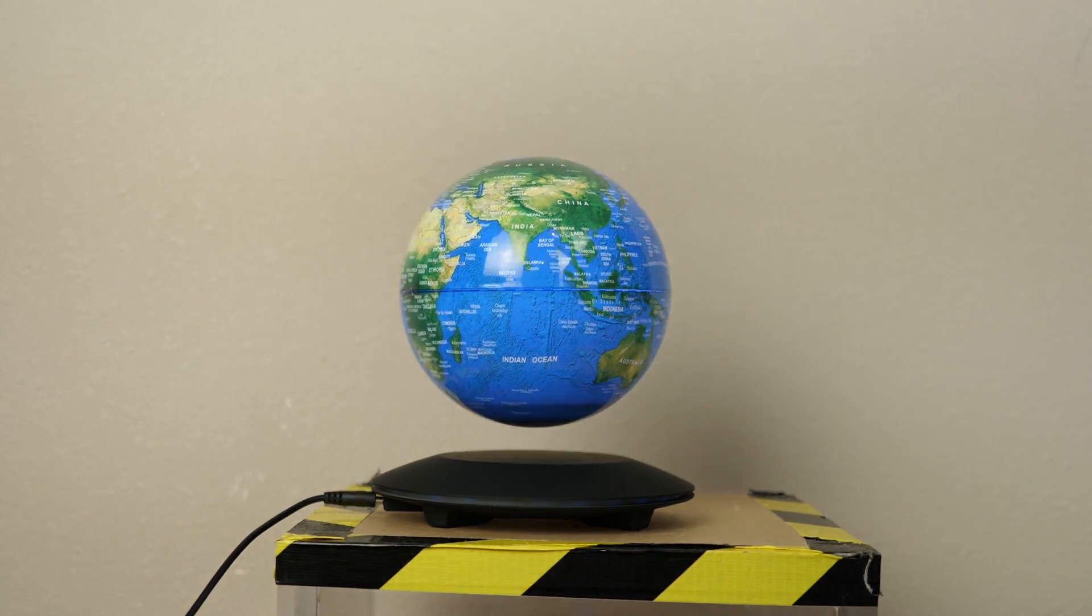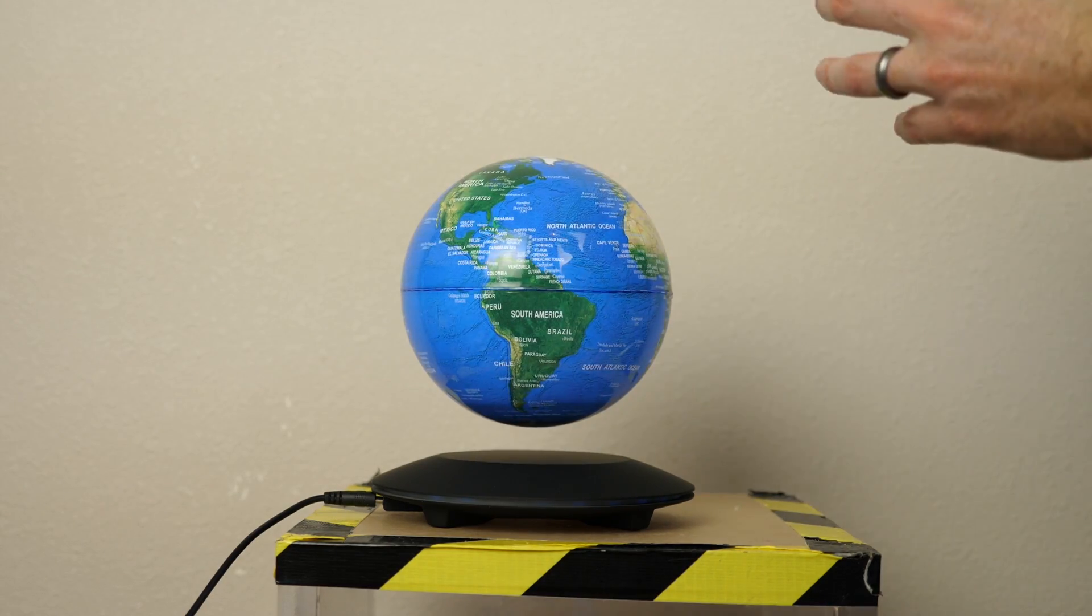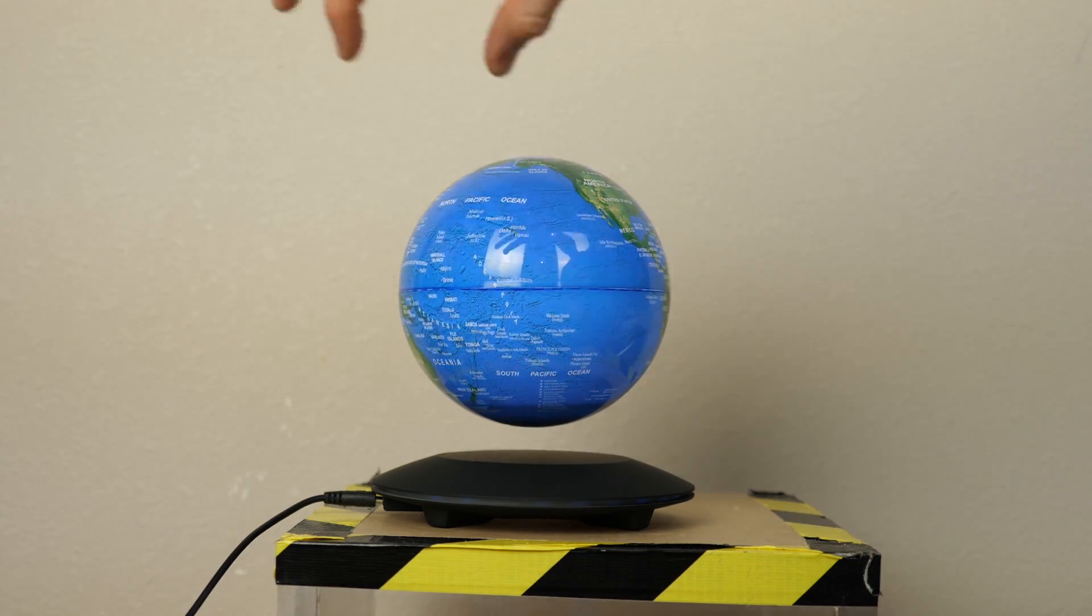Right now the moon is already tidal locked with the earth. So that's why we always see the same face of the moon because it's orbiting at the same rate that it's rotating. So that it always faces the earth.